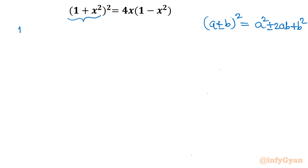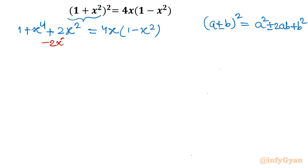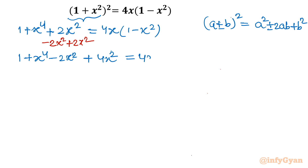Here I will use it. So I will write the LHS as 1 + x⁴ + 2x². The right-hand side is 4x(1 - x²). Now I am going to add and subtract 2x². I will write minus 2x² plus 2x², so that the value is unchanged. So now: 1 + x⁴ - 2x² at one place, and the remaining 4x² equals 4x(1 - x²). This is method number 1.